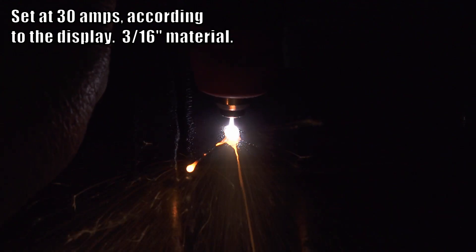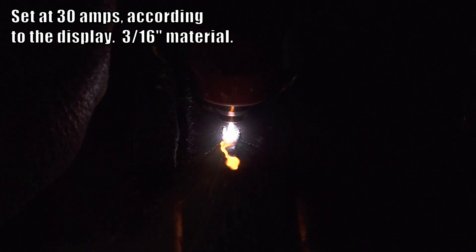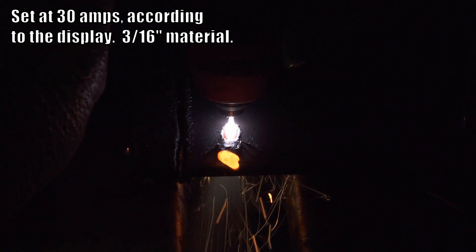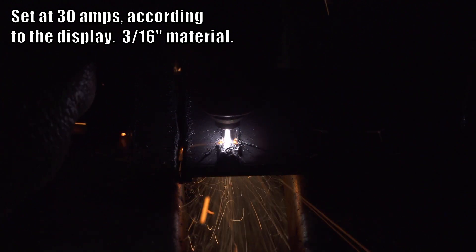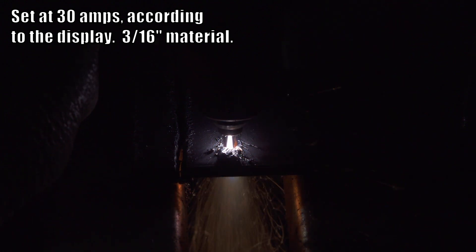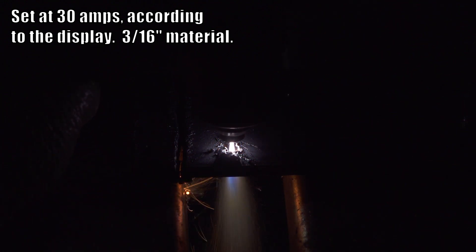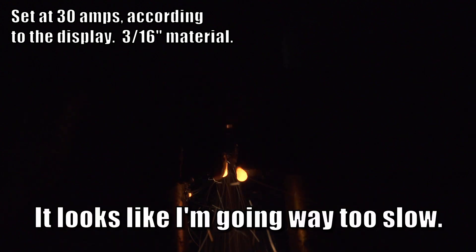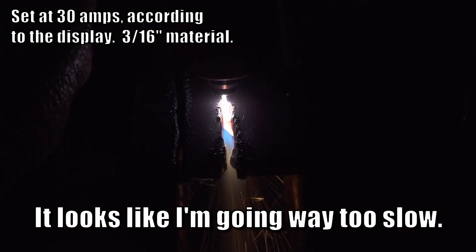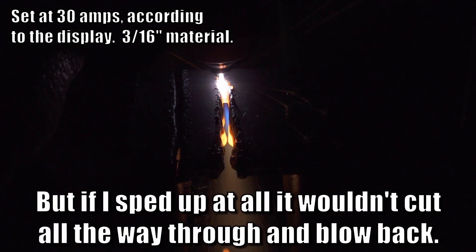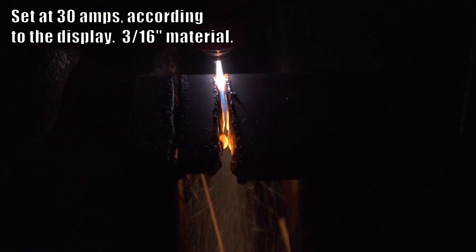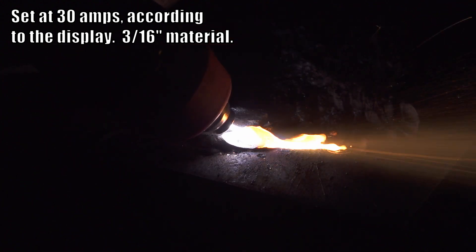When I set the Cut50 at 30 amps on the display, it had far less cutting power than the 30XP, which maxes out at 30 amps. When set at 30 amps, the Cut50 was slow to cut 3/16ths material, and it was very difficult to pierce 3/16ths. The 30XP will pierce 3/16ths plate almost instantly. The Cut50 didn't even cut 1/8 inch material all that well when it was set to 30 amps. It can provide fairly decent gouging when turned down, though.